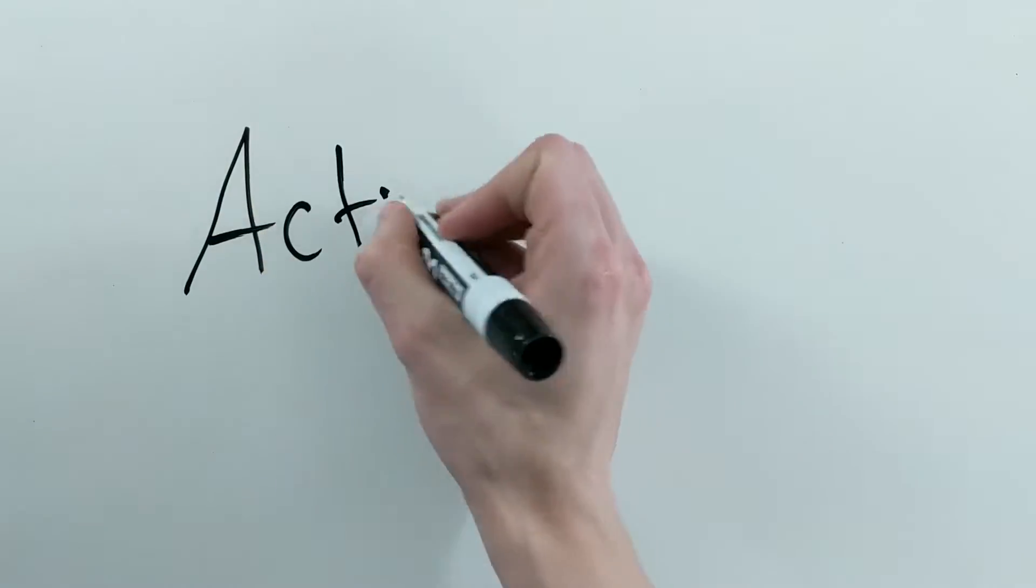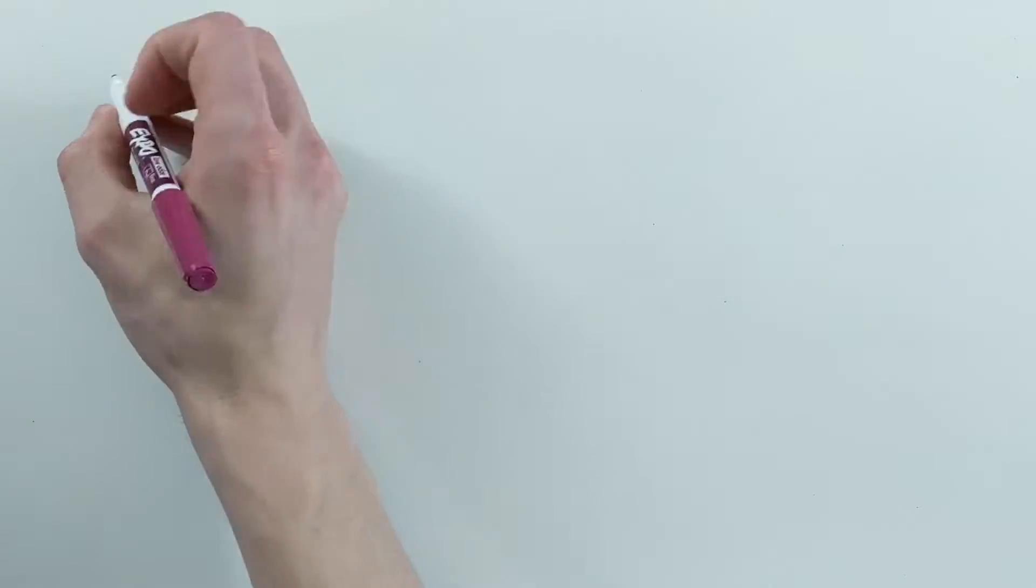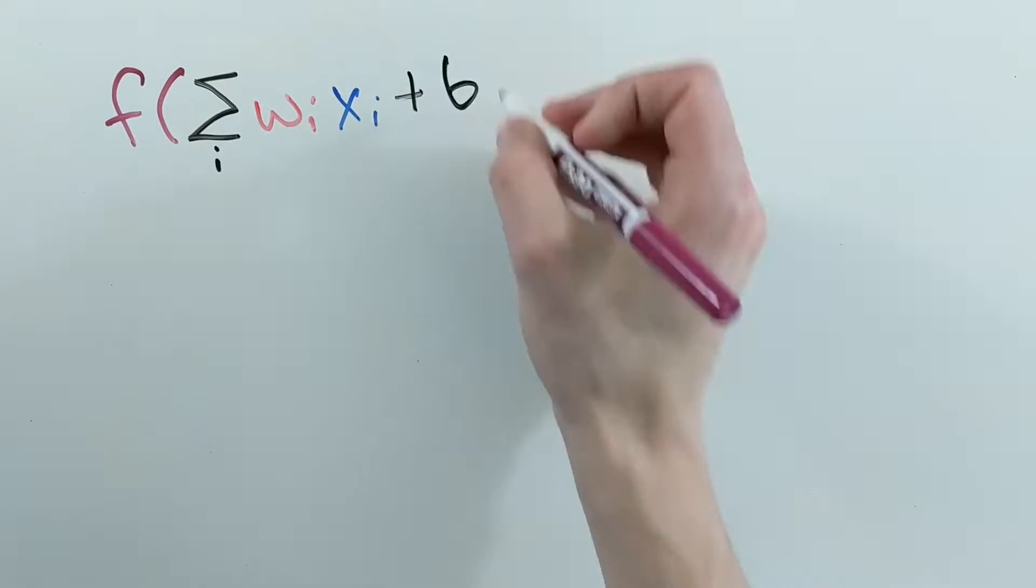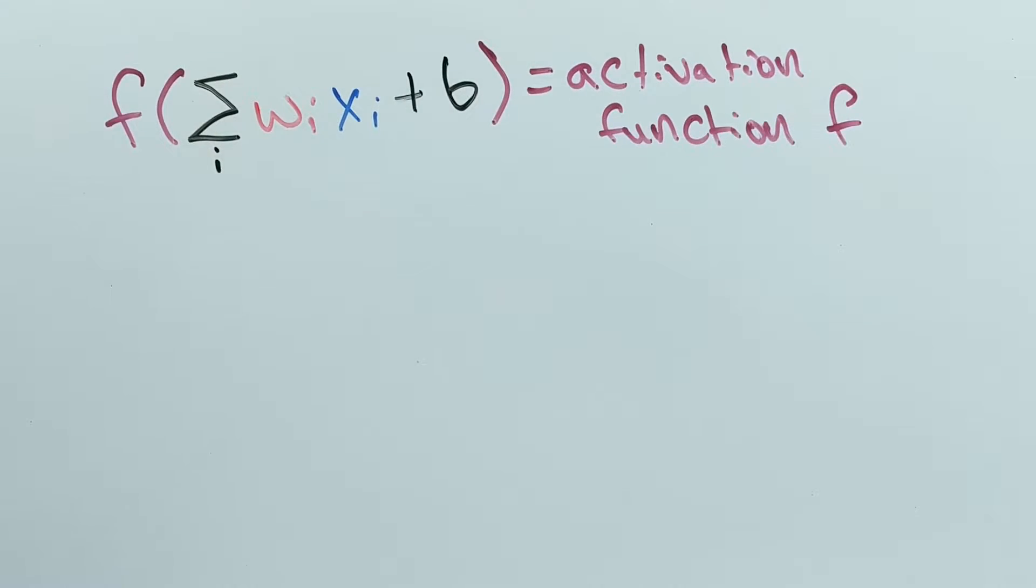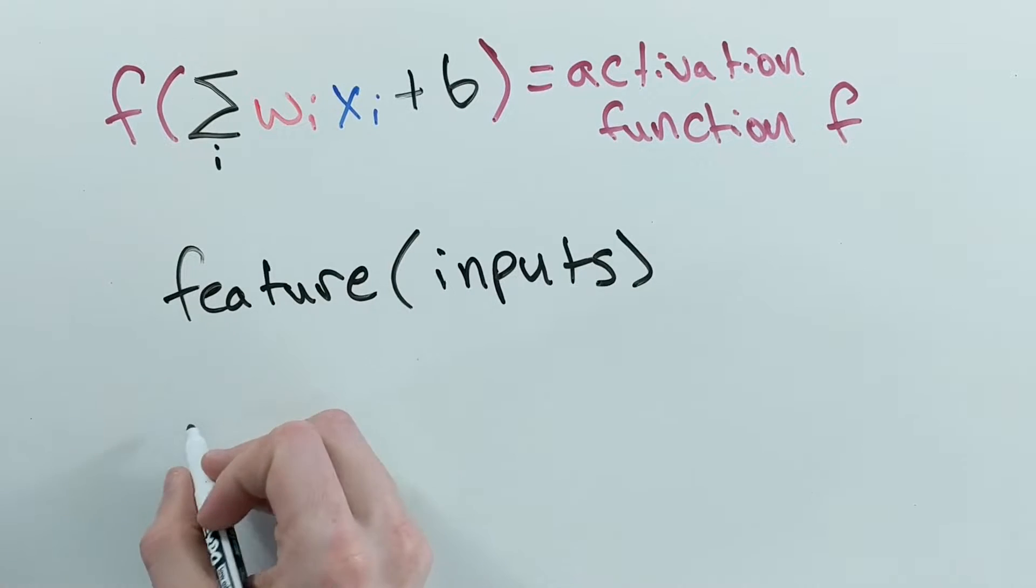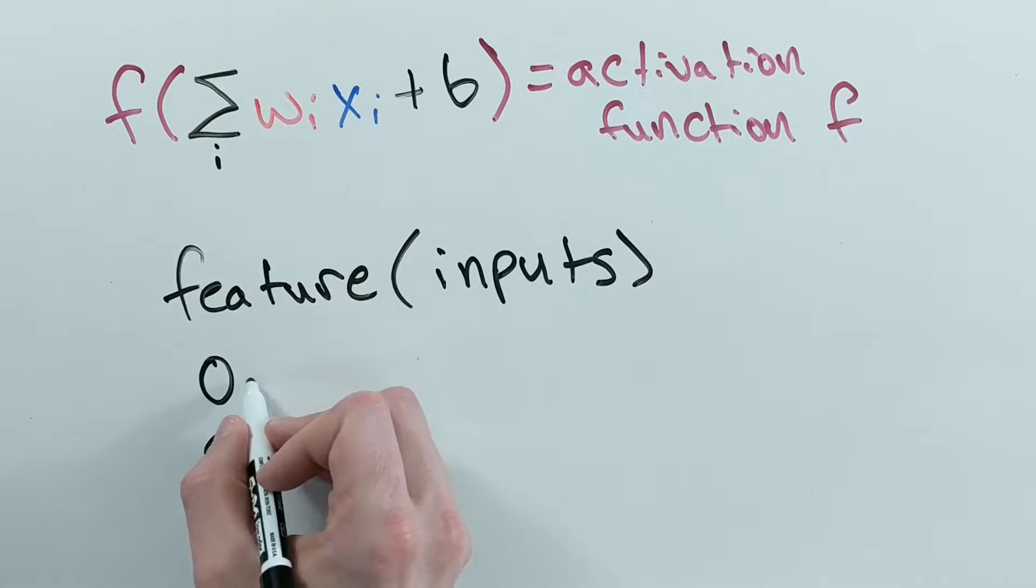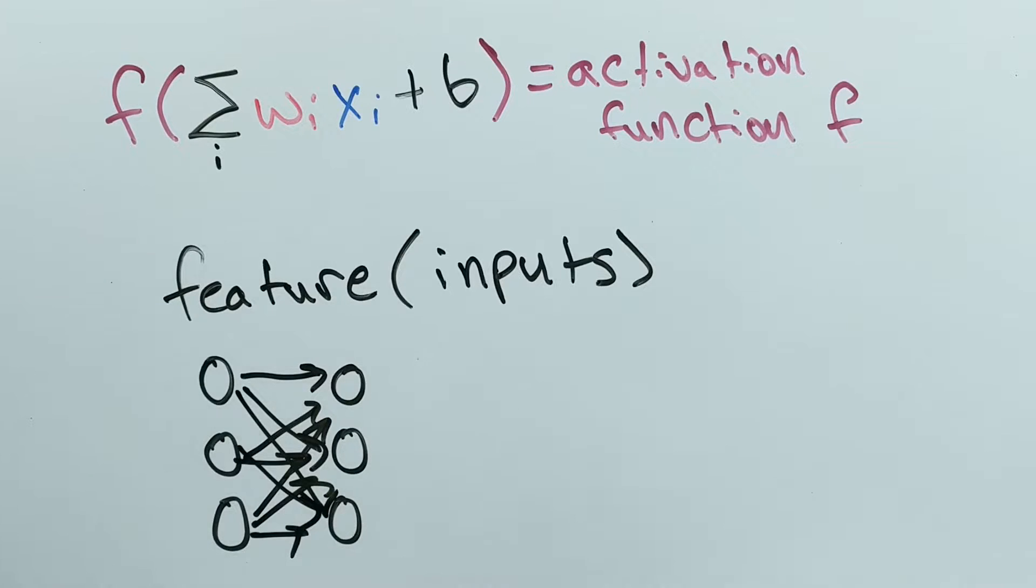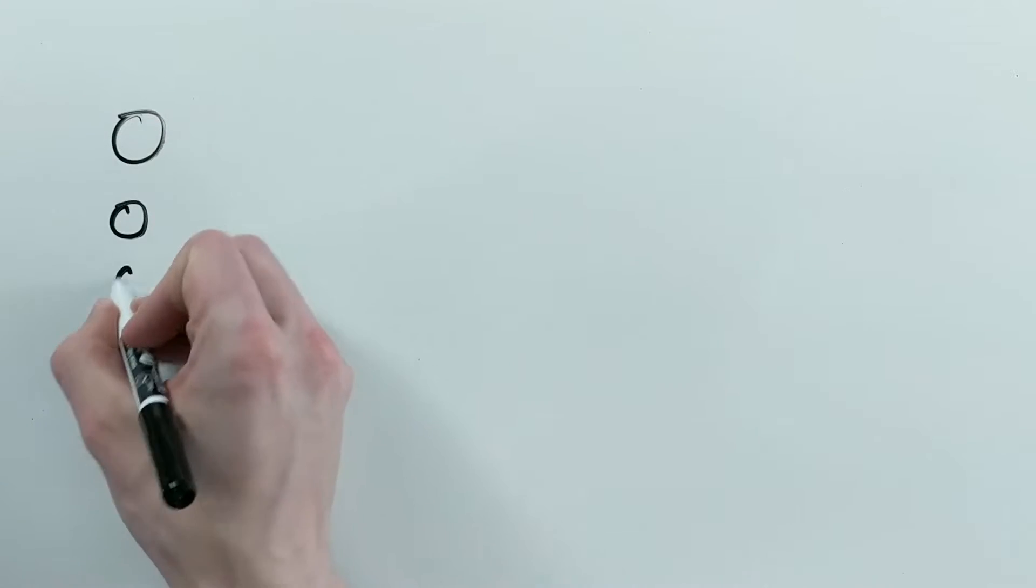An activation function is the function that a neuron applies to the weighted sum of its inputs. The neuron basically creates a more general feature from the inputs. Then with enough of these neurons, we can construct enough features and make more general features out of the previous layer's neurons and so on until we solve the problem.